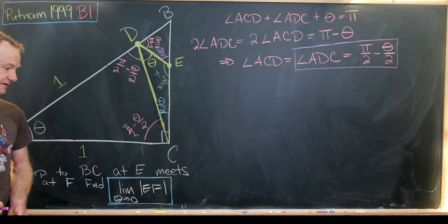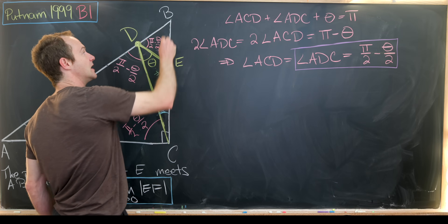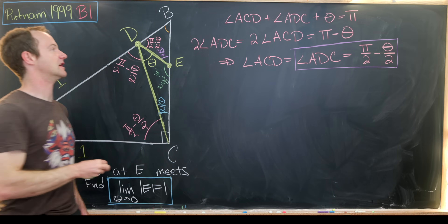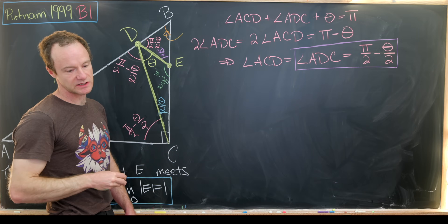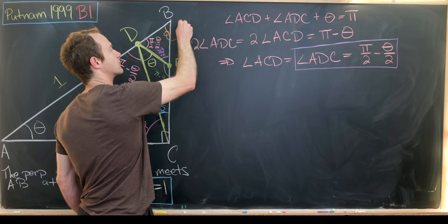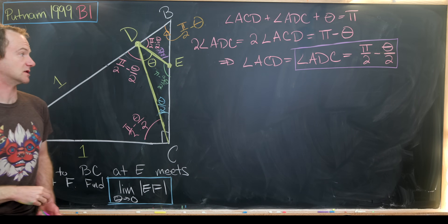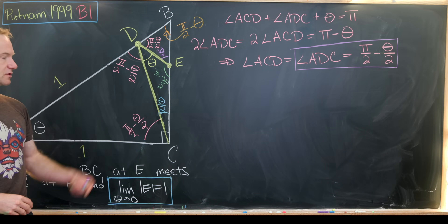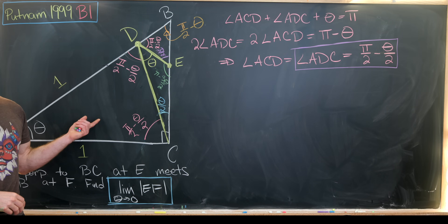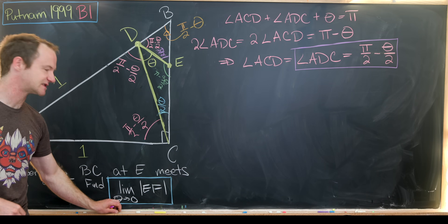One more time — using the sum of angles in triangle BEF — we find the remaining angle is pi/2 minus theta. So now we've got all the angles in our triangles labeled. It's a bit messy, but not too hard if you look at the color coding. We're ready to start using the law of sines to find the measurements of these sides.